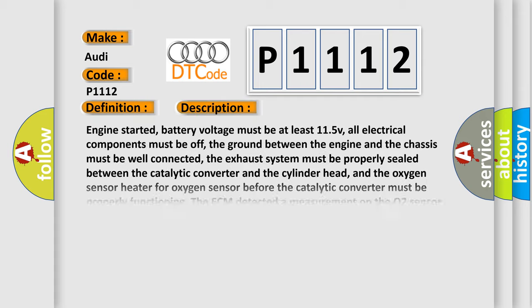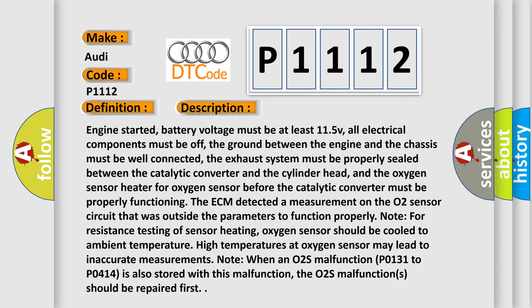Here is a short description of this DTC code. Engine started, battery voltage must be at least 11.5 V, all electrical components must be off, the ground between the engine and the chassis must be well connected, the exhaust system must be properly sealed between the catalytic converter and the cylinder head, and the oxygen sensor heater for the oxygen sensor before the catalytic converter must be properly functioning. The ECM detected a measurement on the O2 sensor circuit that was outside the parameters to function properly. Note for resistance testing of sensor heating: the oxygen sensor should be cooled to ambient temperature, as high temperatures at the oxygen sensor may lead to inaccurate measurements. When an O2 sensor malfunction P0131 to P0414 is also stored with this malfunction, the O2 sensor malfunctions should be repaired first.